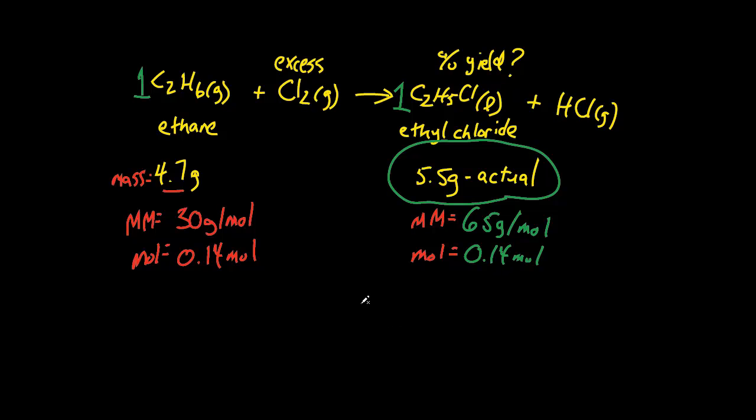Which is just mass equals molar mass times mole. And if we combine the 65 grams per mole with the 0.14 mole, well what we're going to get is around 9.1 grams of ethyl chloride.